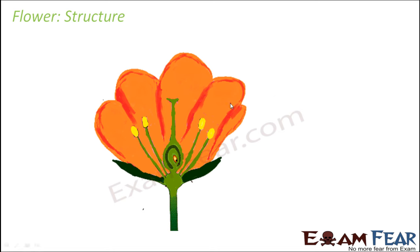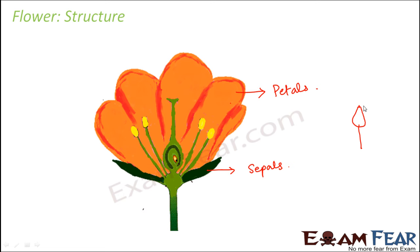The most prominent thing we see in a flower are the colored petals. These colored structures in a flower are called petals — they could be red in some, yellow in some, blue in others, available in a variety of colors. The next important part is the sepals: the leaf-like structures present outside the petals. When there is a bud on a tree, you do not see the petals because they are hidden inside, covered with green leaf-like structures. When the bud turns into a flower, these green leaf-like structures — the sepals — are seen outside the petals, though they are small compared to the petals.